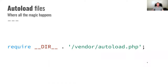In WordPress, if you're working with a plugin or theme, this require line goes in the main plugin file or your functions.php in your theme. If you're using Composer to build out an entire WordPress website, this line would go in your wp-config.php at the very top, to make sure everything gets loaded.